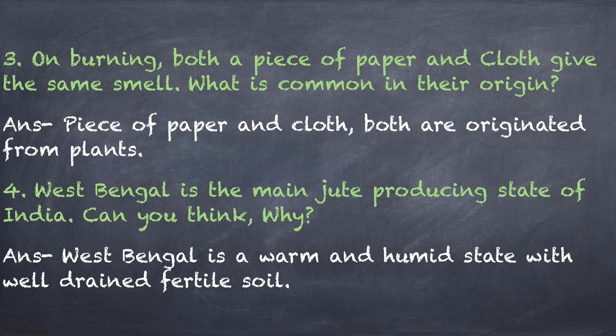Question number 3: a piece of paper and cloth give the same smell on burning — what is common in their origin? Both paper and cloth are originated from plants, that's why they give the same smell on burning. Question number 4: West Bengal is the main jute producing state of India — why? West Bengal is a warm and humid state with well-drained fertile soil, and all these conditions are fulfilled for the production of jute.